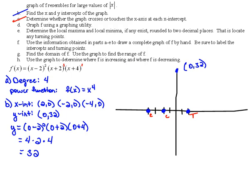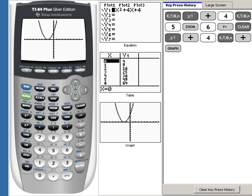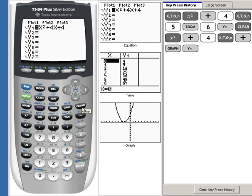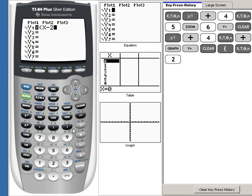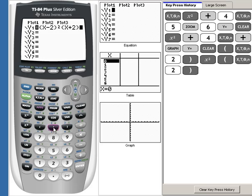Let's go to our calculator. In my y equals, I'm going to clear out what I have and put in our function, which is parenthesis x minus 2, close the parenthesis, squared, and then another parenthesis x plus 2, close the parenthesis, and then another parenthesis x plus 4. We can put it in even in factored form and our calculator will understand it.